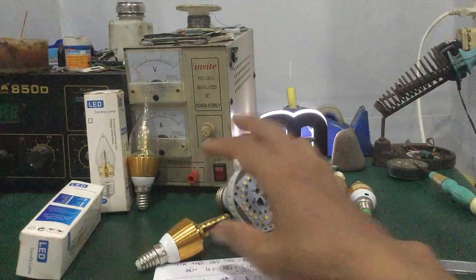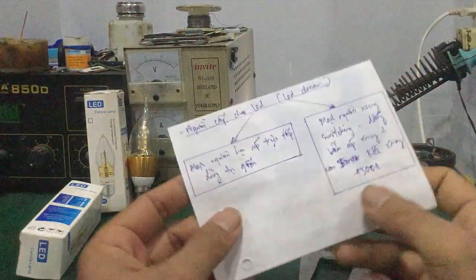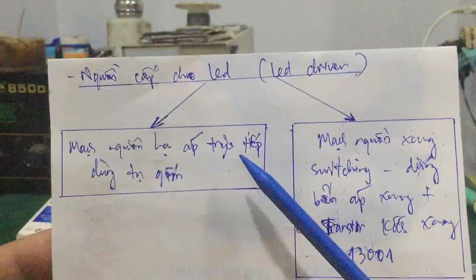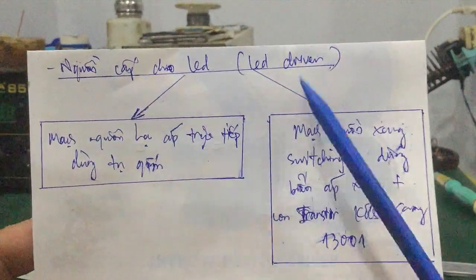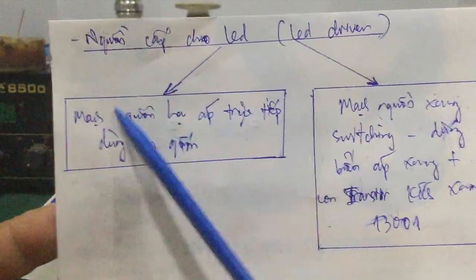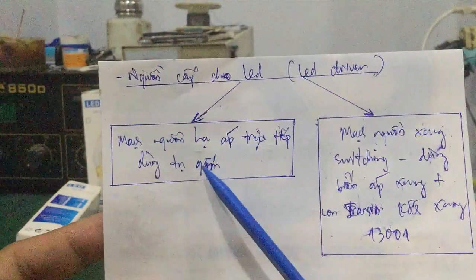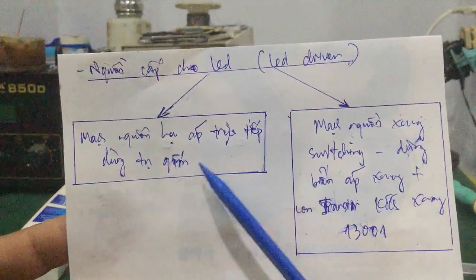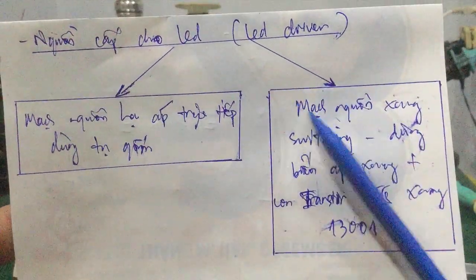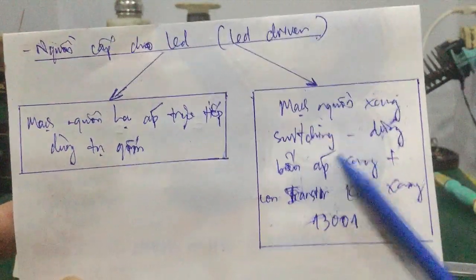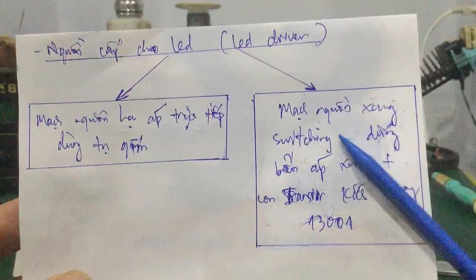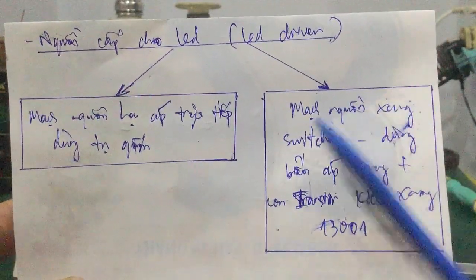Tiếp theo mình sẽ tìm hiểu về nguồn LED driver cung cấp cho đèn LED Candle, LED nến. Ở đây nó sẽ dùng 2 nguồn: thứ nhất là mạch nguồn hạ áp trực tiếp dùng tụ gốm; thứ hai là mạch nguồn xung switching — giống như trong cục sạc điện thoại hoặc adapter, nó sử dụng mạch nguồn xung switching.